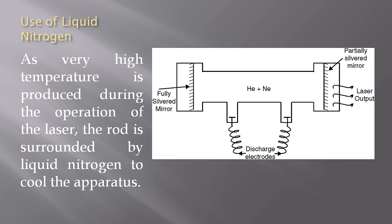Use of liquid nitrogen. As very high temperature is produced during the operation of the laser, the rod is surrounded by liquid nitrogen to cool the apparatus. So the use of liquid nitrogen is to provide the cooling effect.